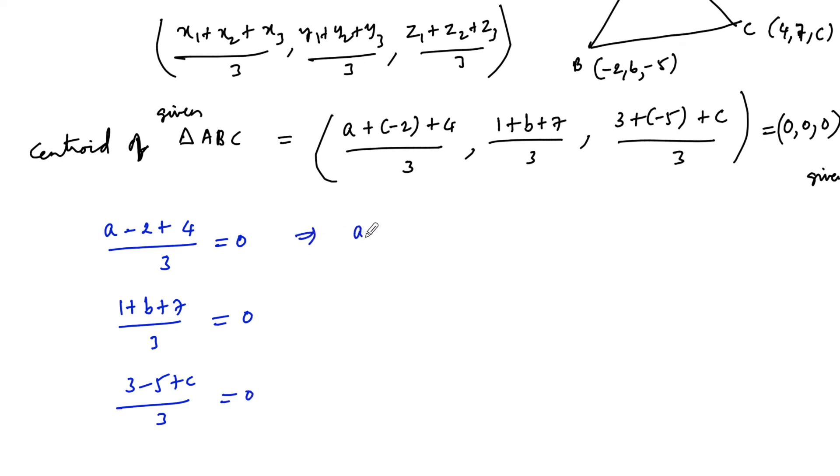Which implies a = -2, and here b + 8 = 0 which implies b = -8, and here c - 2 = 0 which implies c = 2. So we got the three values: a = -2, b = -8, and c = 2. This is the answer.